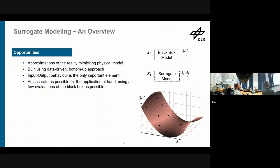In the end, they do provide approximations of the reality mimicking physical models, or at least they provide a consistent representation of the information you have in data. It does not have to be first principles. You can also build a surrogate model purely on something that you have in tabular form. They are typically used with data-driven bottom-up. So you do have data, you build a model on top, you use the model for whatever you want.